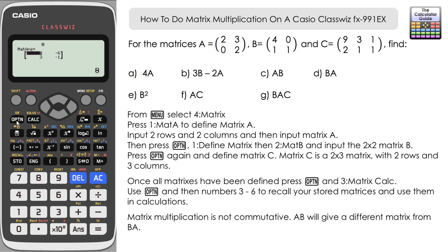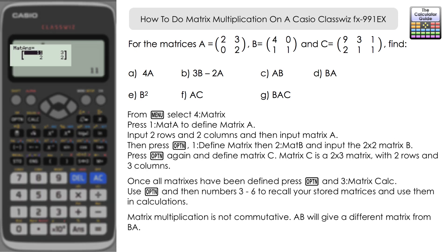So let's give that a go. It's option 3 for matrix A, option 4 for matrix B, and here we have our answer AB, 11, 3, 2, 2.